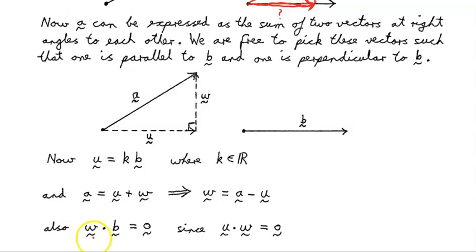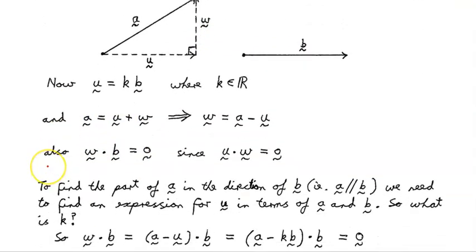What else do we know? We know that W is perpendicular to B, so the scalar product of vector W with vector B is zero. That must be true because we set U and W up to be at right angles to each other, and W is at right angles to B, so W dot B equals zero. To find the part of A in the direction of B — that is, the part of A parallel to B — we need to find the expression for vector U in terms of A and B. We want U and W in terms of A and B, because this is the projection of A onto B.